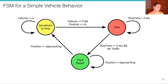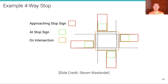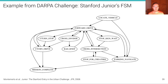This is of course a very simple example just to illustrate the concept — in practice, these finite state machines are much more advanced. For a four-way intersection, we could have states such as: approaching stop sign (red box), at stop sign (green boxes), and on intersection (orange box). Here's also a real, higher-level example from the DARPA challenge — Stanford Junior's finite state machine. You can see there is a 'locate vehicle' state, and once located, we enter the 'drive' state.